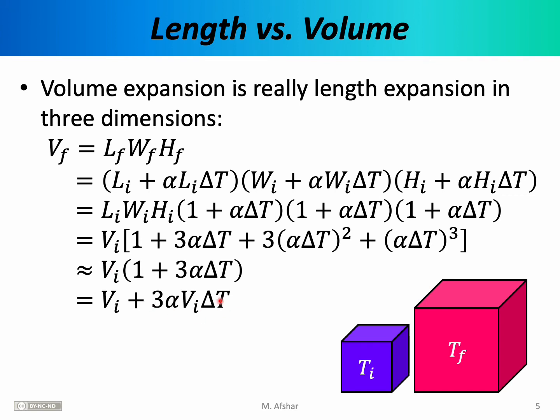So we're going to approximate the final volume simply as the initial volume times 1 plus 3 alpha delta T. Distributing the V initial into the parentheses, this is the expression that we get. And now we're beginning to see what delta V is. Notice we have V final is equal to V initial plus some quantity. This quantity here must be the change in the volume of this cube. But of course we learned earlier on the previous slide that delta V must equal beta V initial delta T. Setting these two expressions equal to each other, we find that beta must be approximately equal to 3 times alpha. So linear expansion and volume expansion are in fact related in a relatively straightforward way. If you know the linear or length coefficient of expansion for a material, you can calculate the volume coefficient of expansion by simply taking alpha and multiplying it by 3.